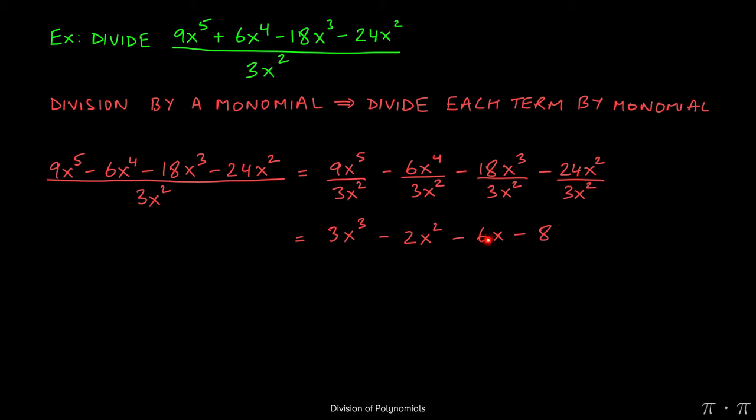18 divided by 3 will yield 6. x cubed divided by x squared will just be a single x by itself.